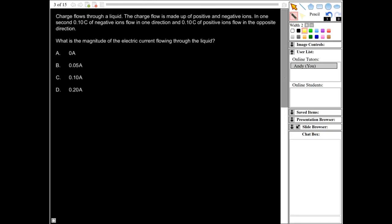Next question. It says charge flows through a liquid. The charge flow is made up of positive and negative ions. In one second, 0.10 Coulombs of negative ions flow in one direction, and 0.10 Coulombs of positive ions flow in the opposite direction. What is the magnitude of the electric current flowing through the liquid?